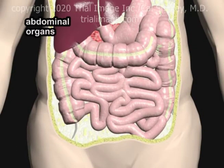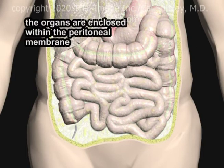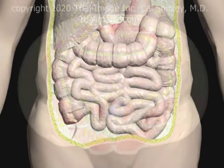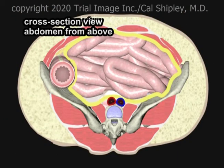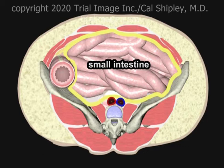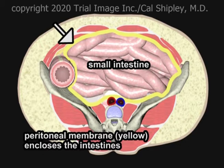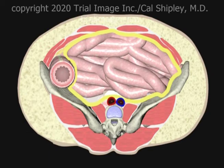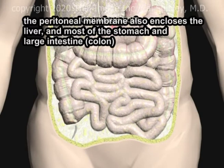Let's start by looking at some abdominal anatomy. The abdominal organs are enclosed within the peritoneal membrane. Let's look at a cross-sectional view of the abdomen from above. The peritoneal membrane, here shown in yellow, encloses the small intestine, the liver, most of the stomach, and most of the large intestine.